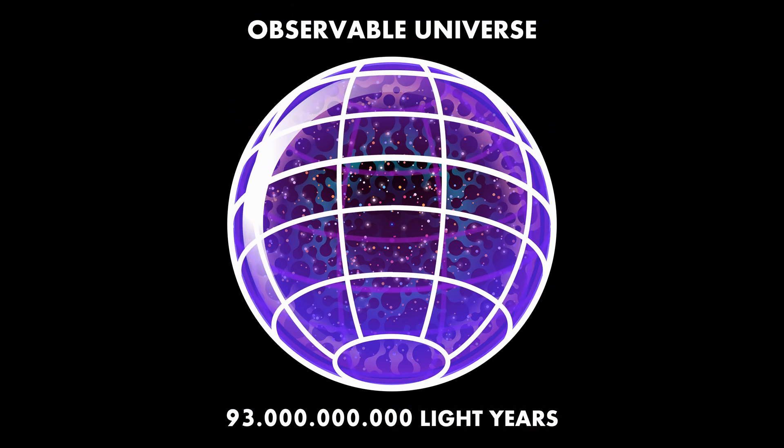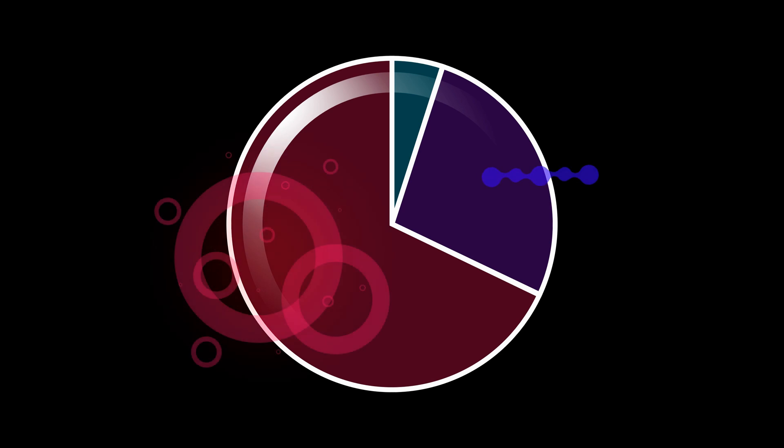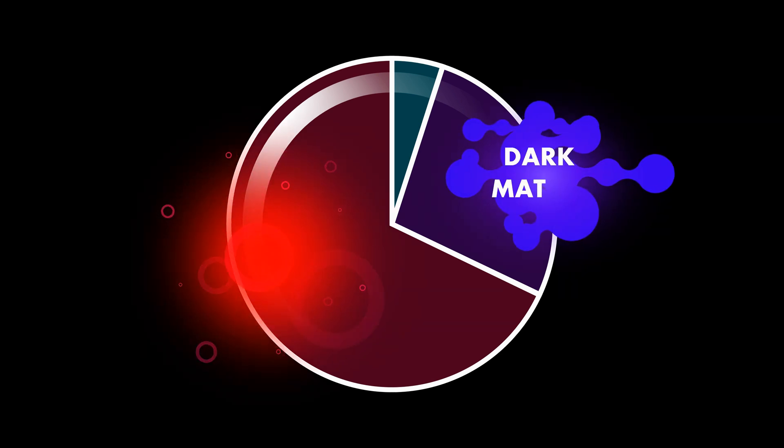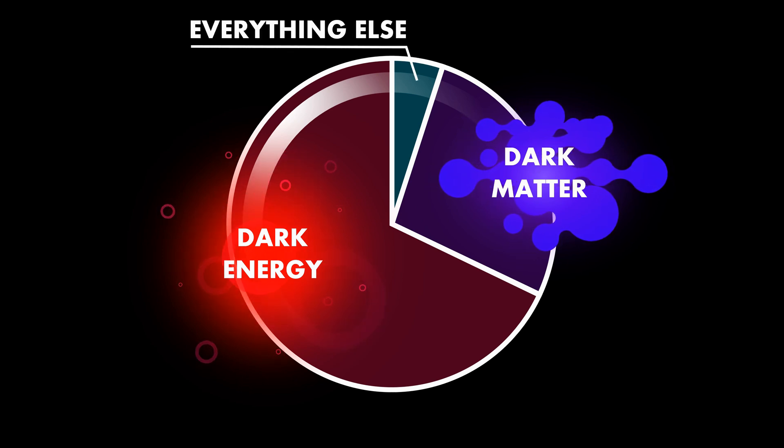27% of the universe is dark matter, and 68% is dark energy. Both are invisible, which means we are only able to see 5% of the universe.